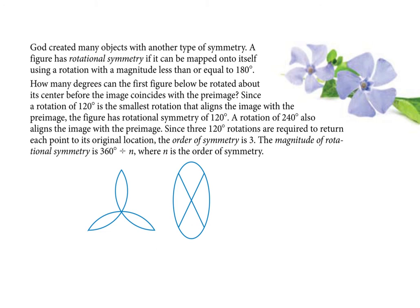The next type is rotational symmetry. God created objects with another type of symmetry, and you'll see both linear and rotational symmetry in creation. This flower does not have line symmetry because if you reflect one piece across, it's not the same on the other side. But if you rotate it and just twirl it, this leaf would land on top of the next one — that is rotational symmetry.